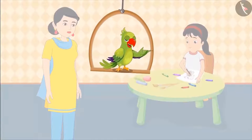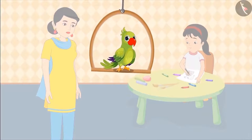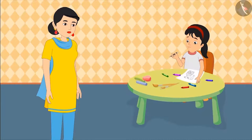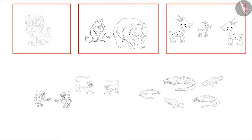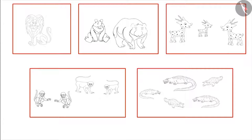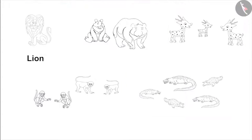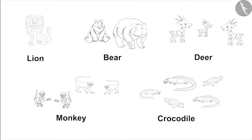Pinky then goes home and draws pictures of all the animals. Look, Mom — how are these drawings? Wow, Pinky, you have made very good drawings! Now make a group of one type of animals and give each group a name. The name of each group should be the name of the animals shown in it. Now below each group, write the number of animals in that group.